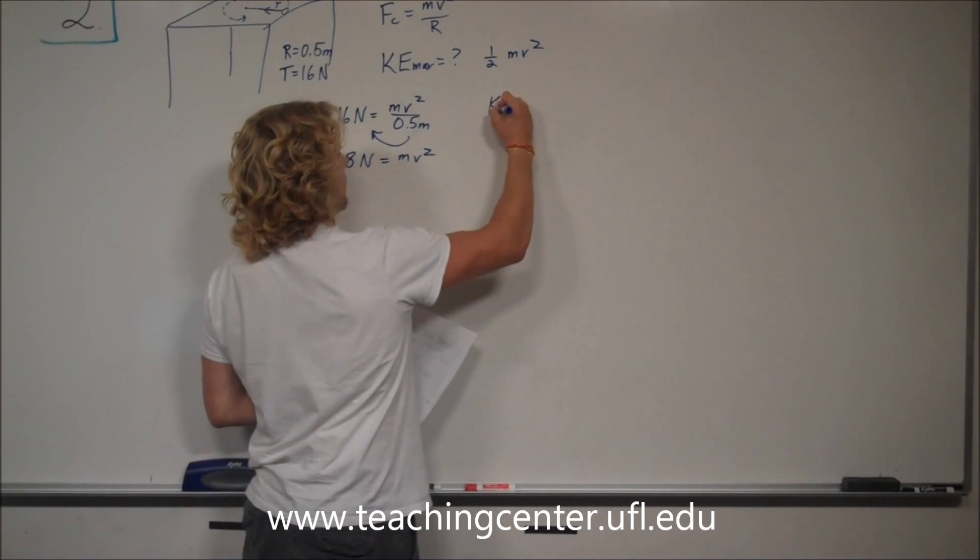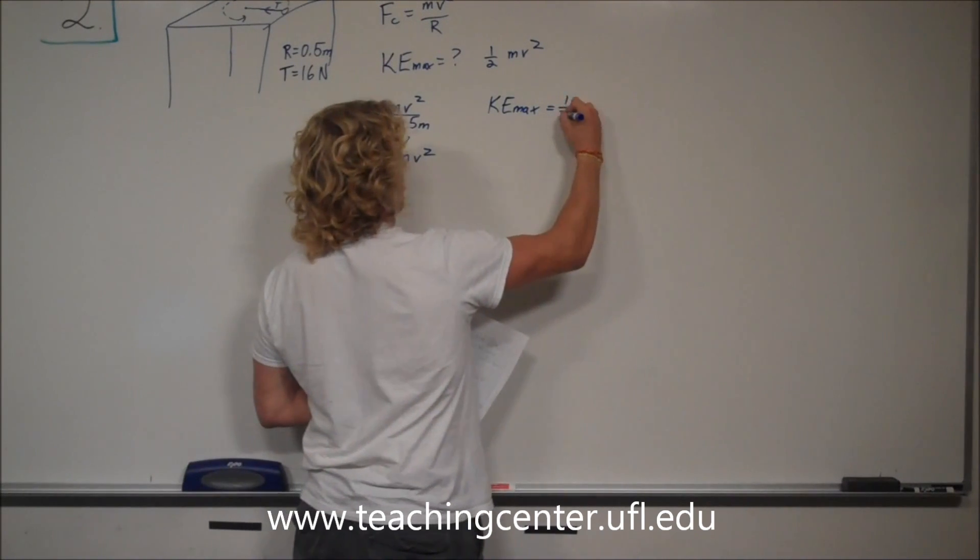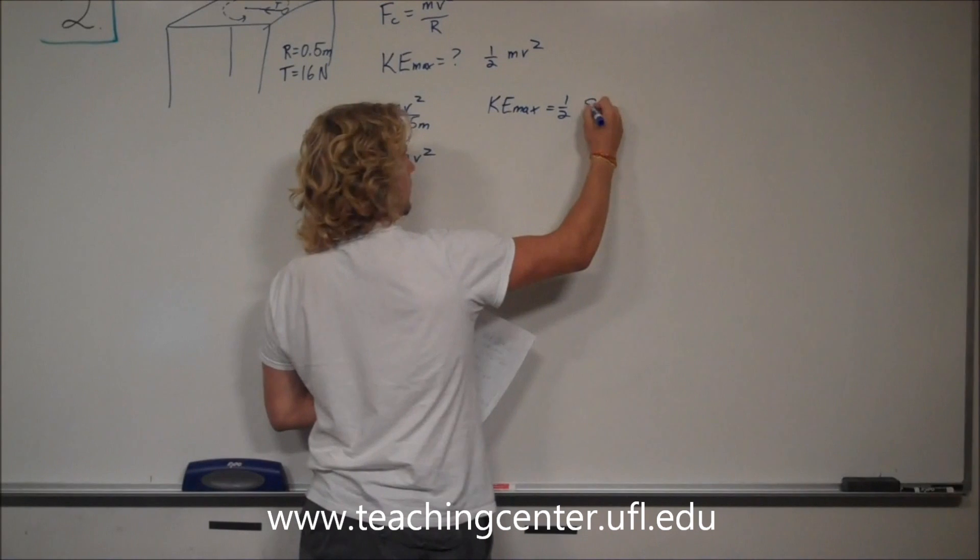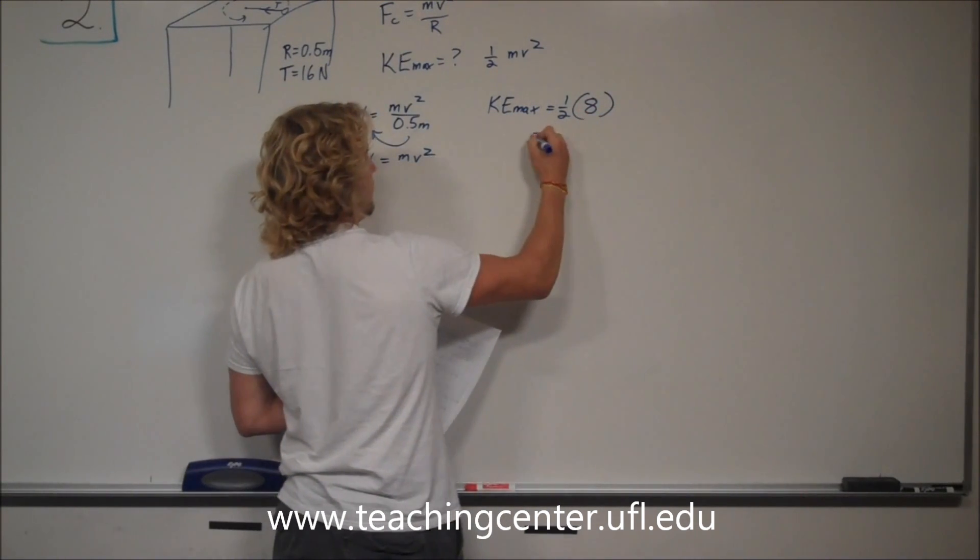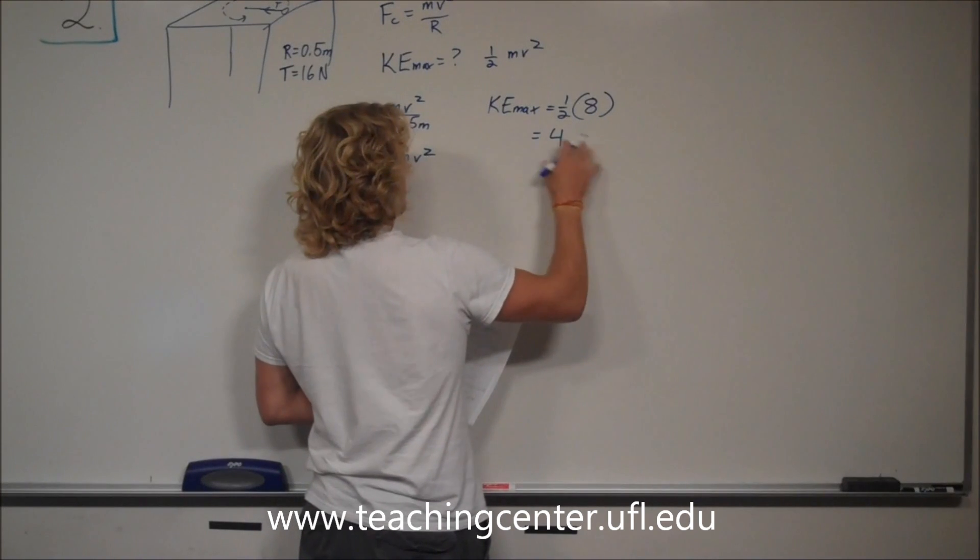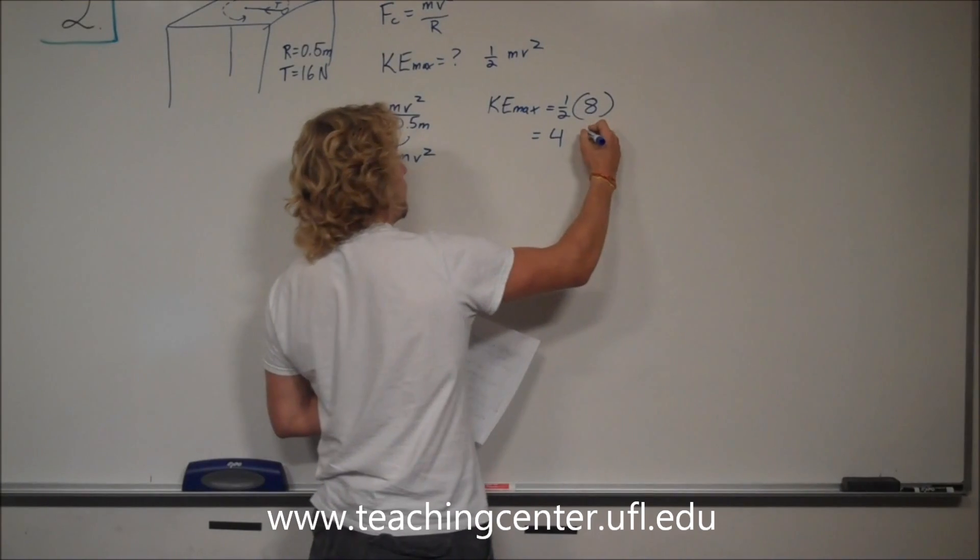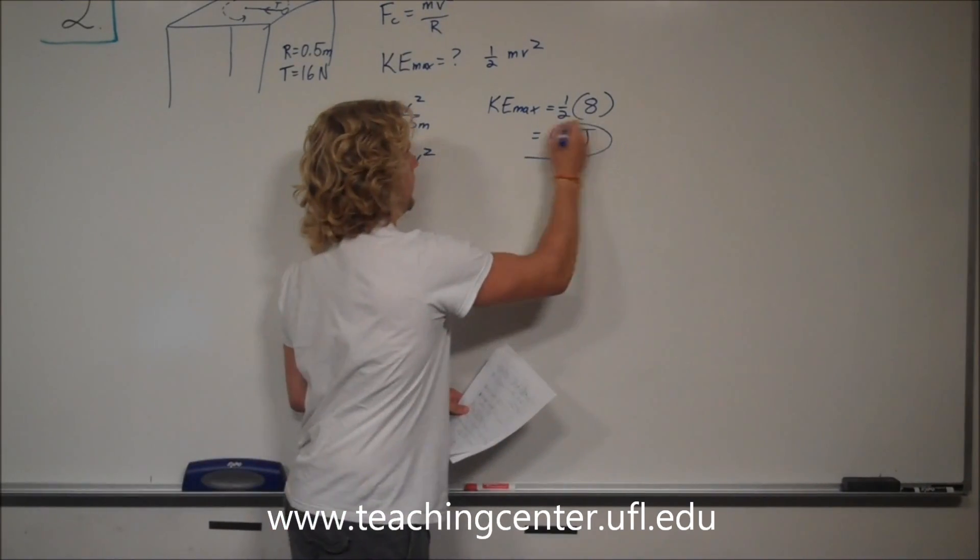So kinetic energy max is equal to one-half mv squared. Plug it in: 8 newtons. This is going to be equal—kinetic energy is in joules—so it's one-half of eight, four joules. That is your correct answer.